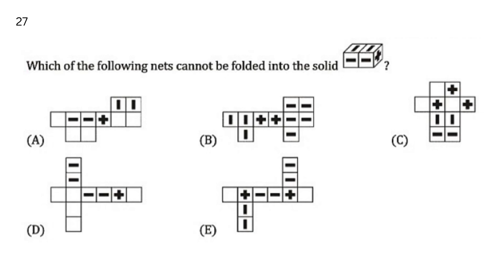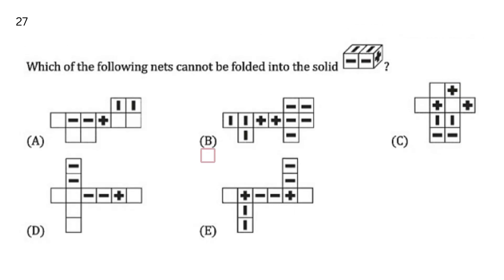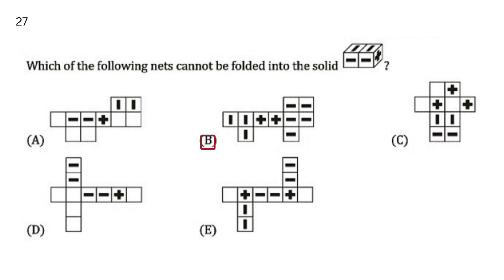Which of the following nets cannot be folded into the solid? In mein se kaunse net fold hoke ye solid nahi bana sakta. Ek tariqa ye hai, kya hum is me se minus signs ko dekhaein, jis me minus signs odd ya even hai. Hamaare options hain A, B, C, D, and E. Our answer is B. Kyu ke is mein minus odd hain.